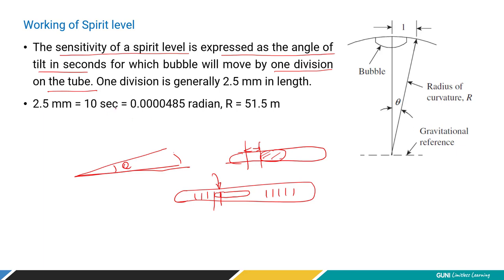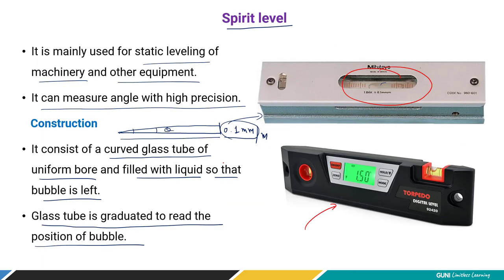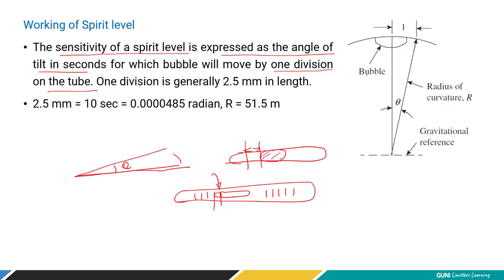Generally one division — as you can see in the figure, there are graduations: one, two, three, four, five, six, seven. If the bubble moves by one graduation, the angle of tilt for that movement is defined as the sensitivity of the spirit level.